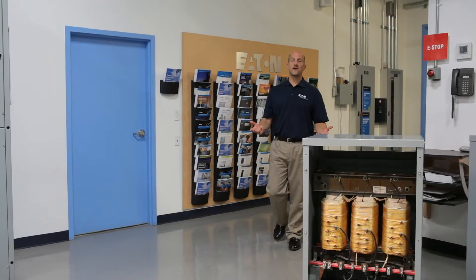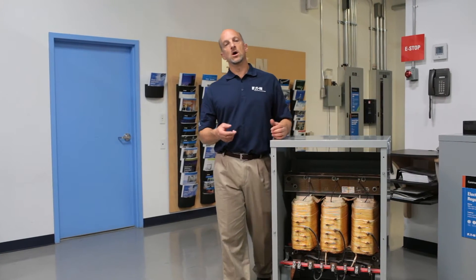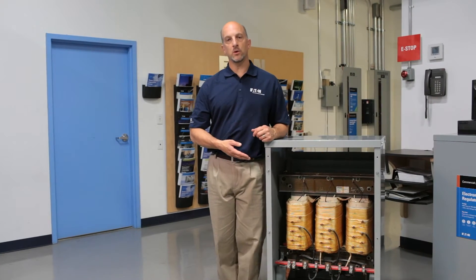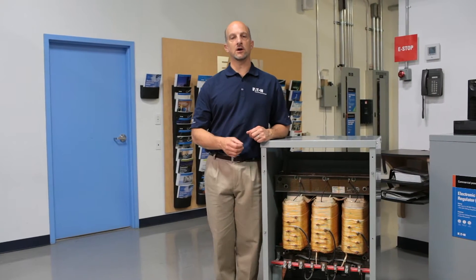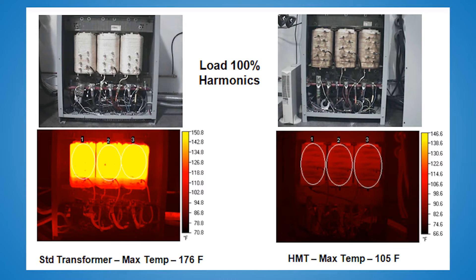The effects of harmonic distortion can appear in several ways. Overheating of equipment is a very common result of harmonics. In commercial applications, harmonic current causes the transformer's core and windings to overheat. Over time, this will progressively damage the transformer, resulting in premature failure.